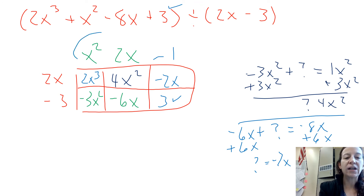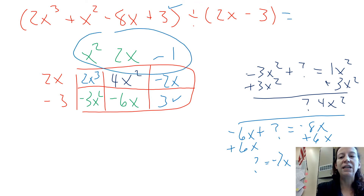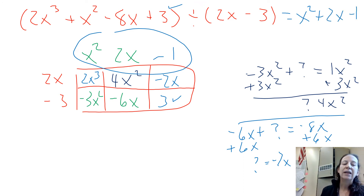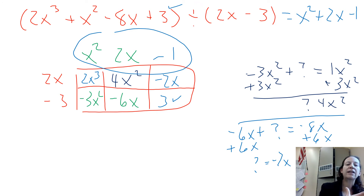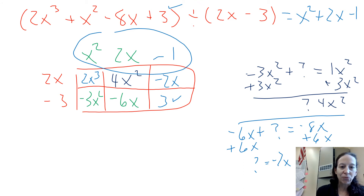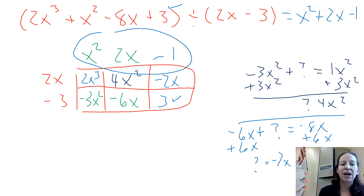Notice that it matched. Remember the answer is what's across the top — you can't just leave it in the box. You have to rewrite it, so the answer is x squared plus 2x minus 1. Pause the video or rewind it if you need to — that's one advantage of watching a video. You can go back and walk through the process again if you missed something.